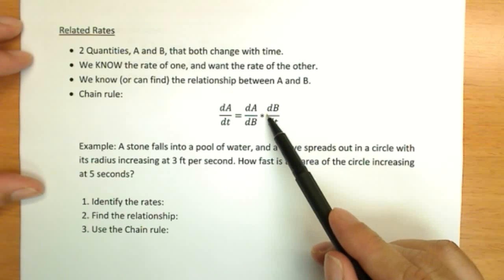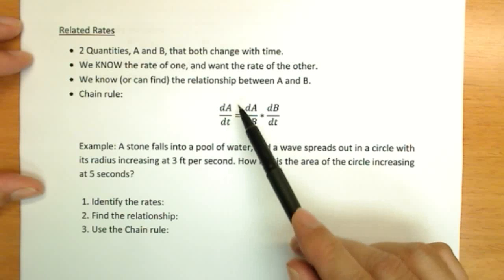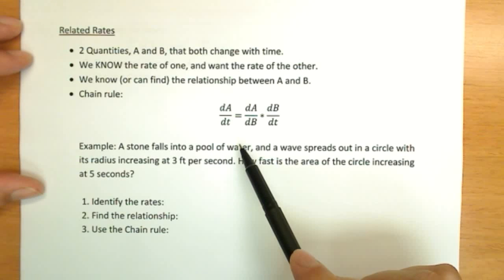they're not fractions, but if they were fractions, if you canceled the dBs, you'd have dA/dT. So this makes sure that you always write a version of the chain rule that is correct.